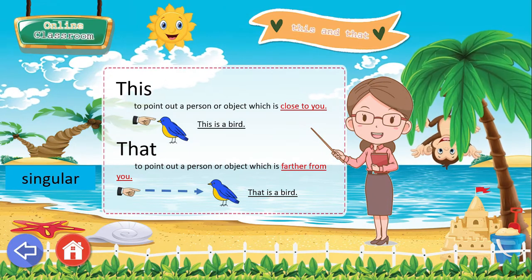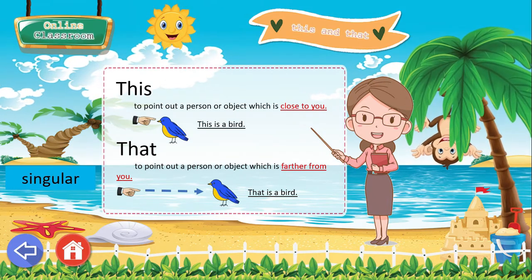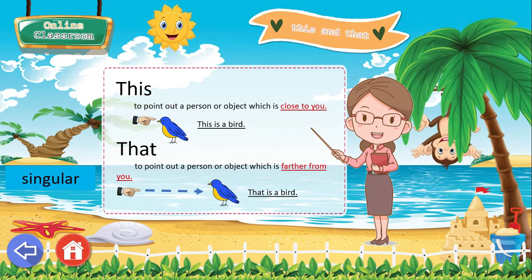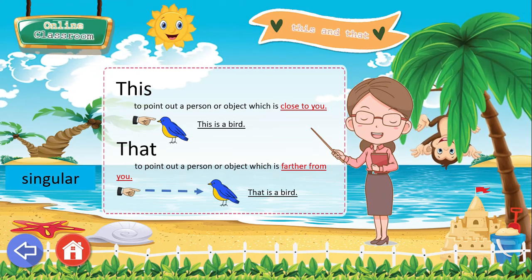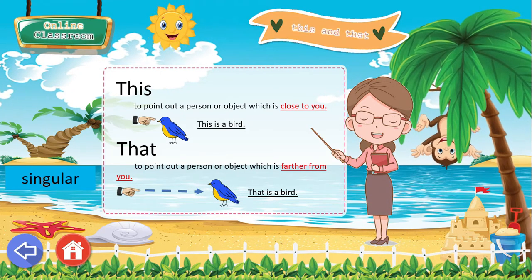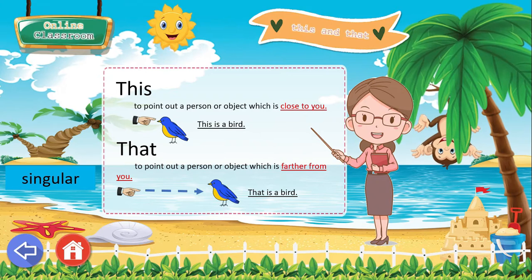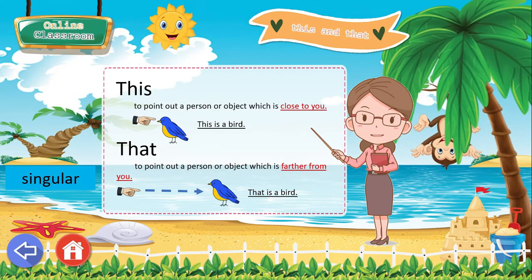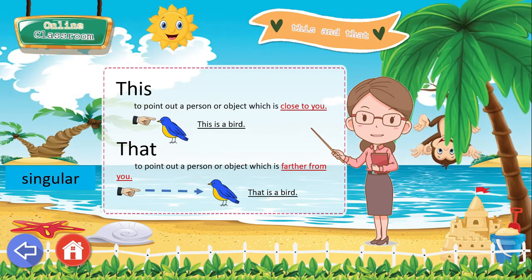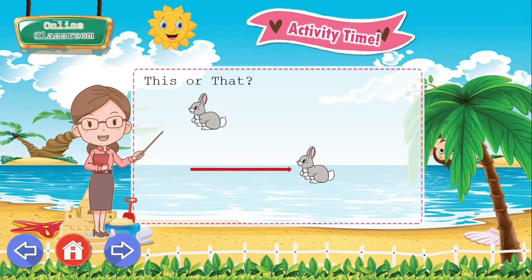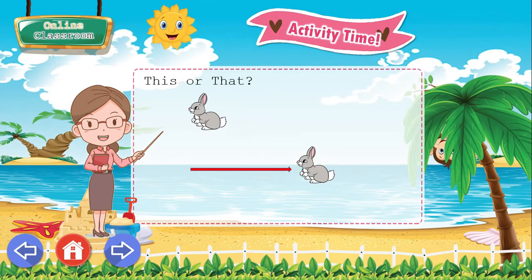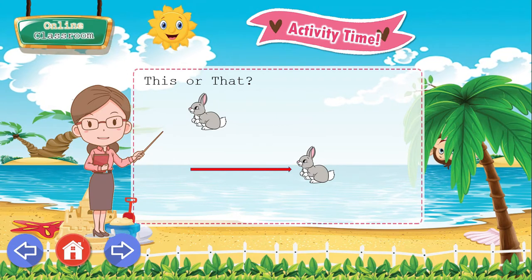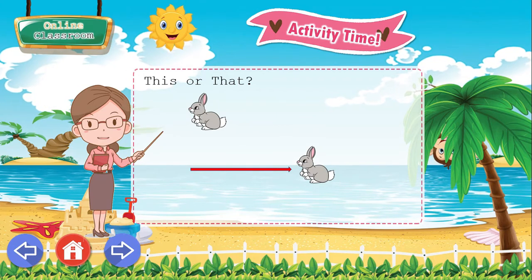Remember, you are going to use the words 'this' and 'that' if it is singular — only one person or object. So, in this picture, I want you to answer either 'this' or 'that'.